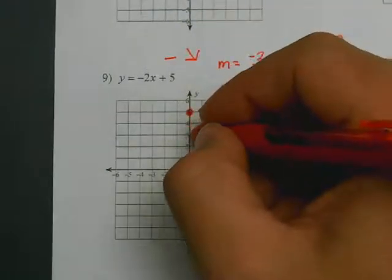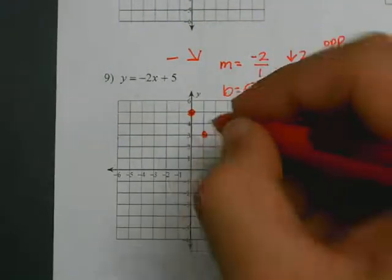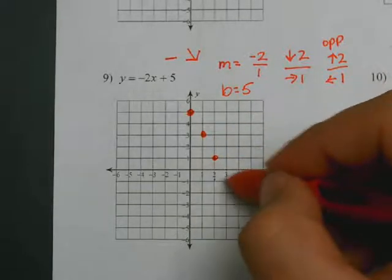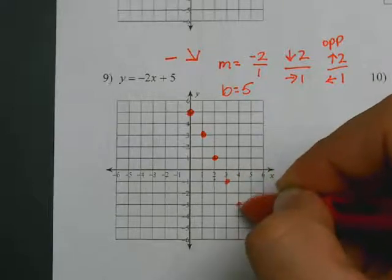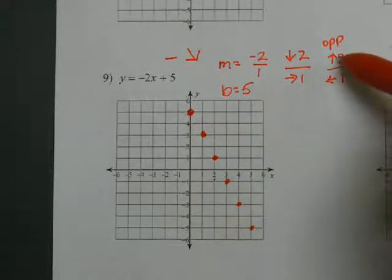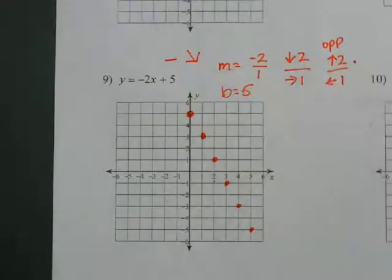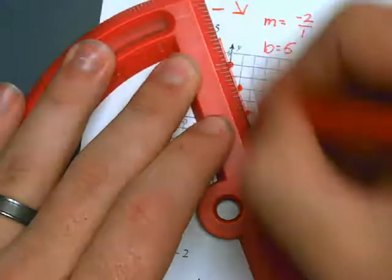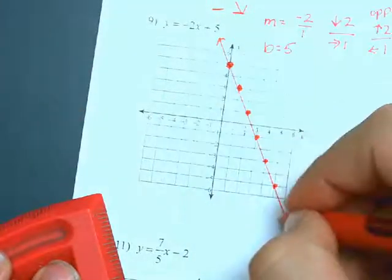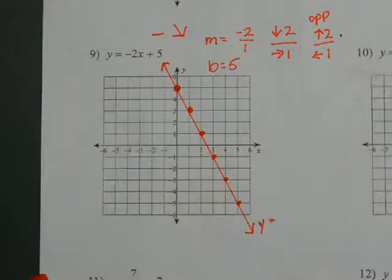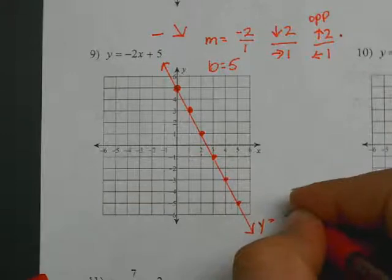Down 2, right 1 — I keep going until I can't put any more. I can no longer go in that direction, so I ask myself: can I do the opposite? The opposite is up 2, left 1 — and I'd be off the graph. So from there, I get my protractor and connect my coordinate points, graph my line, and label it y equals negative 2x plus 5.